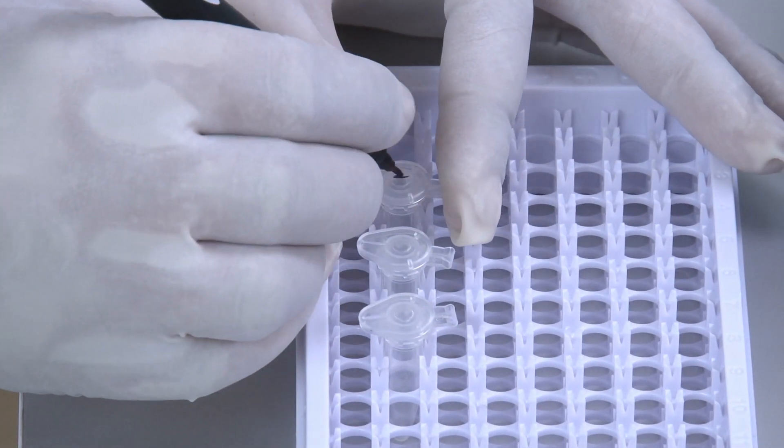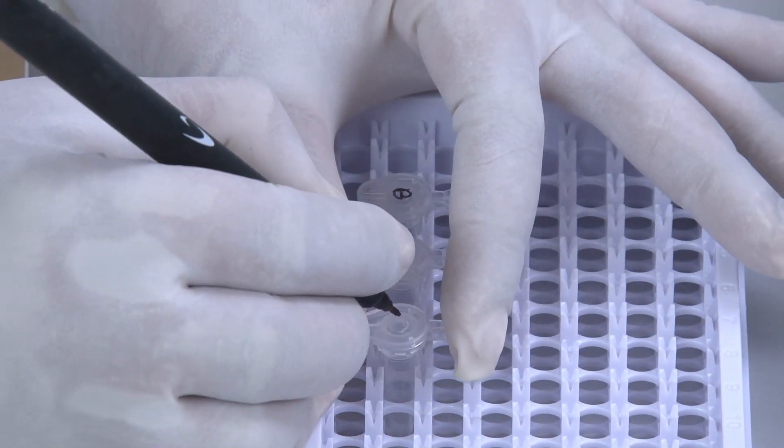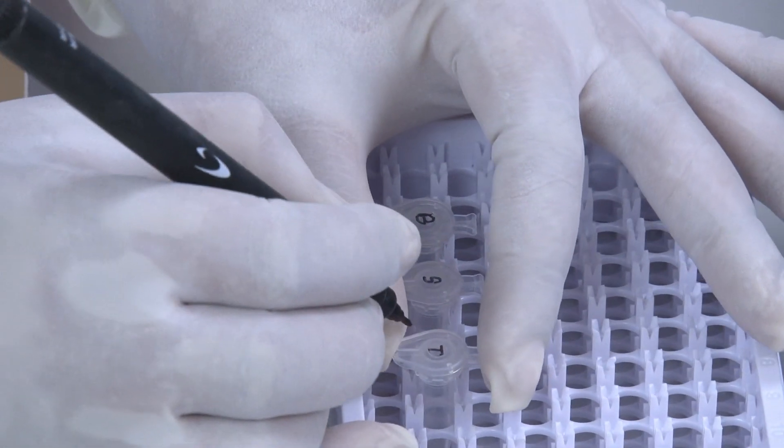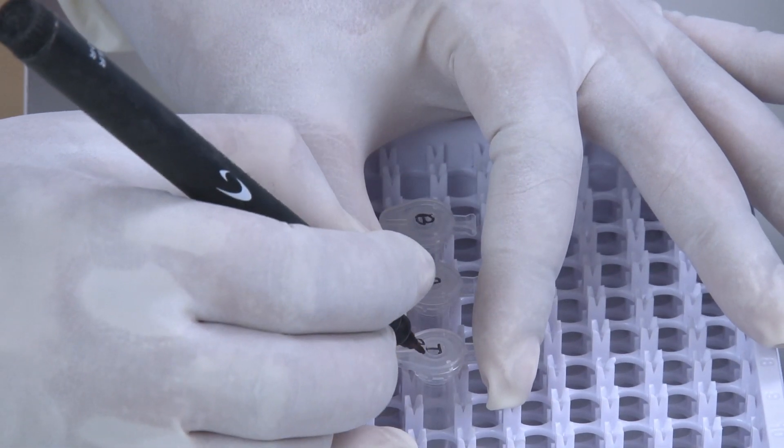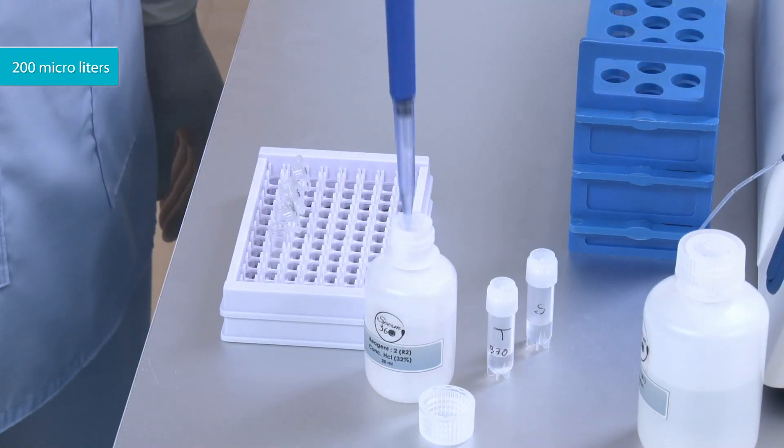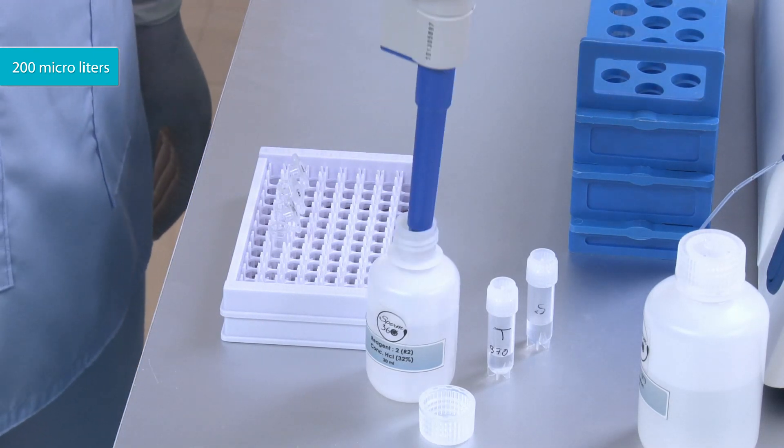Label them as blank, standard, and test with patient ID. Put 200 microliters of Reagent 2 to all three tubes.